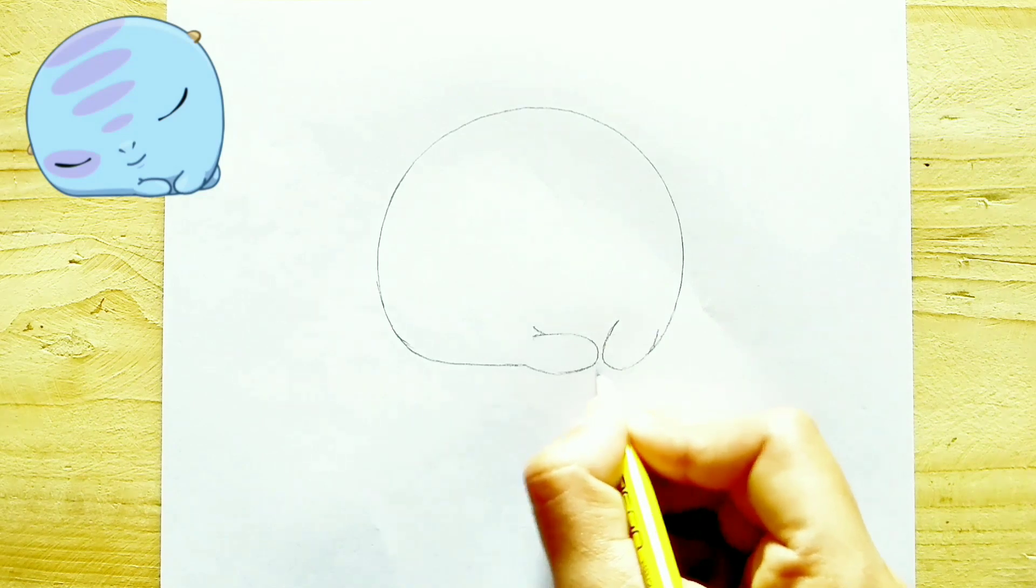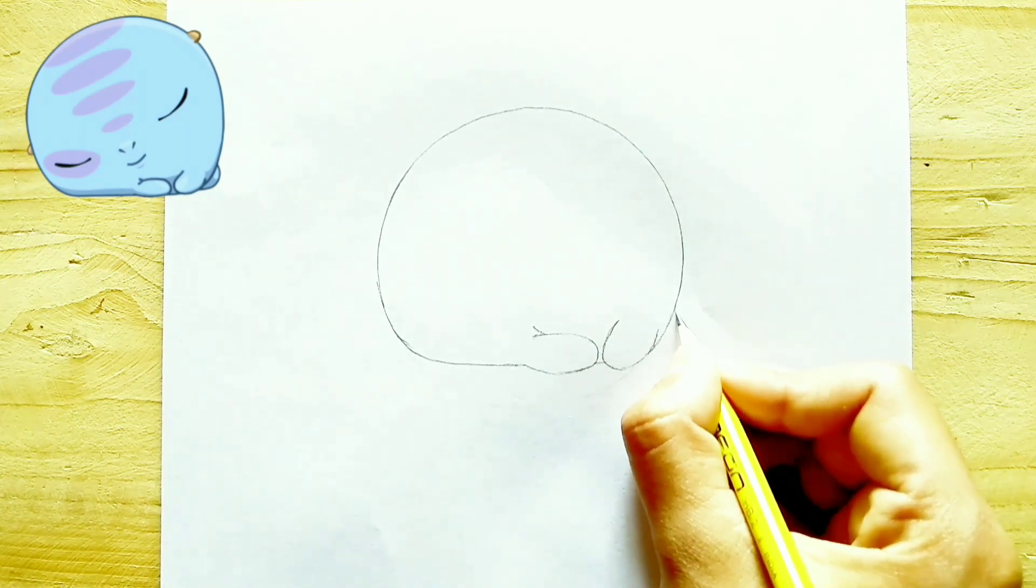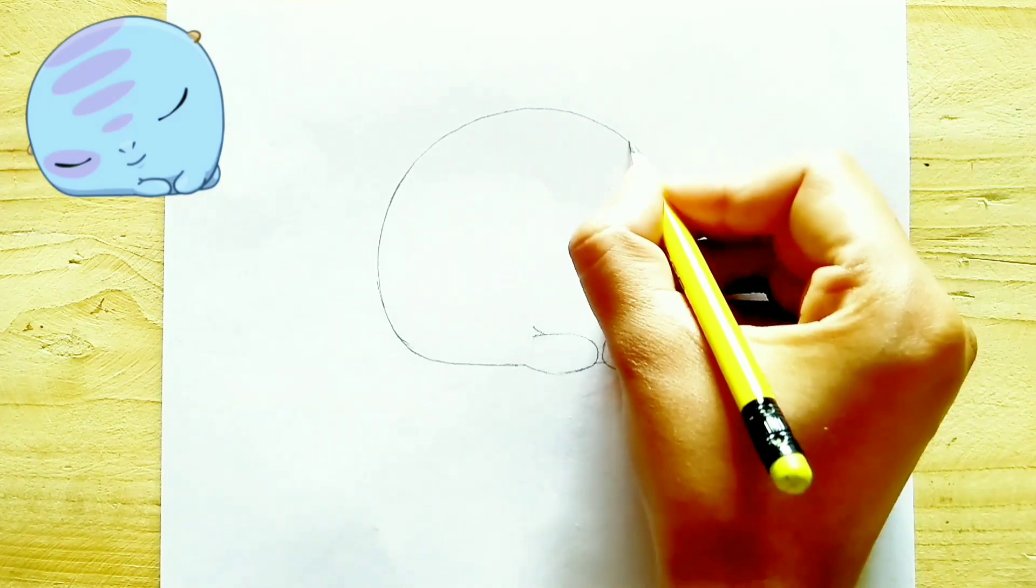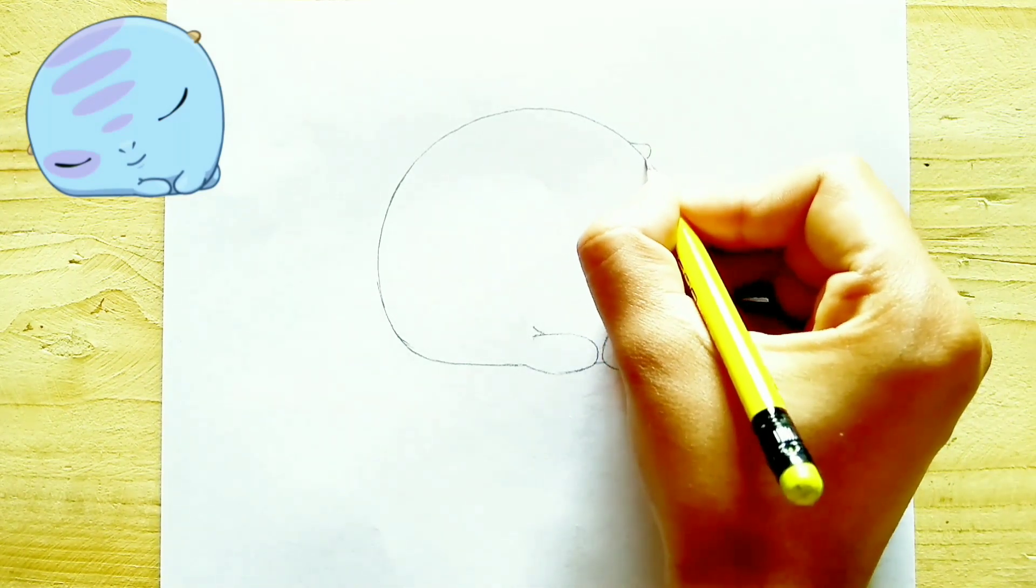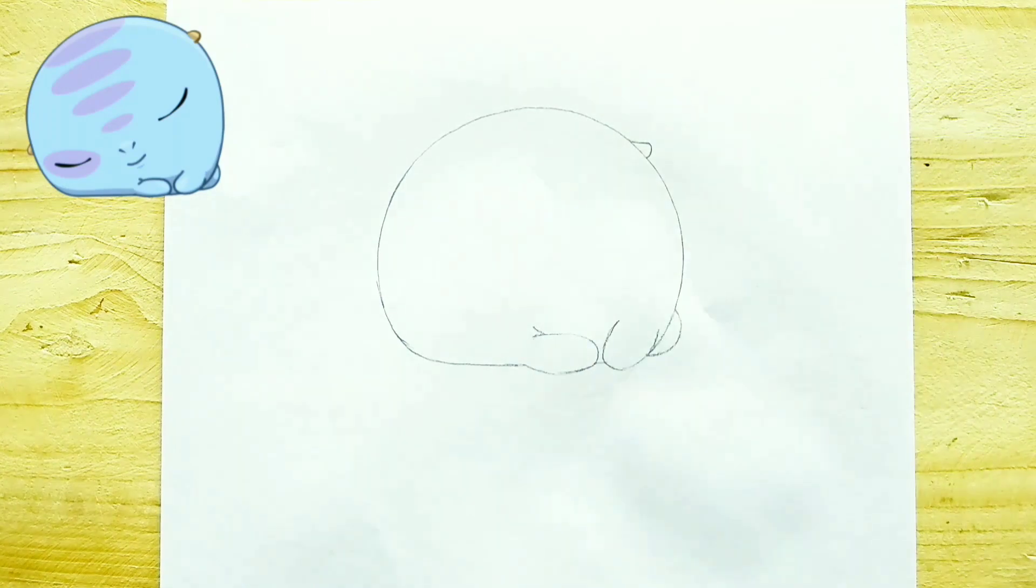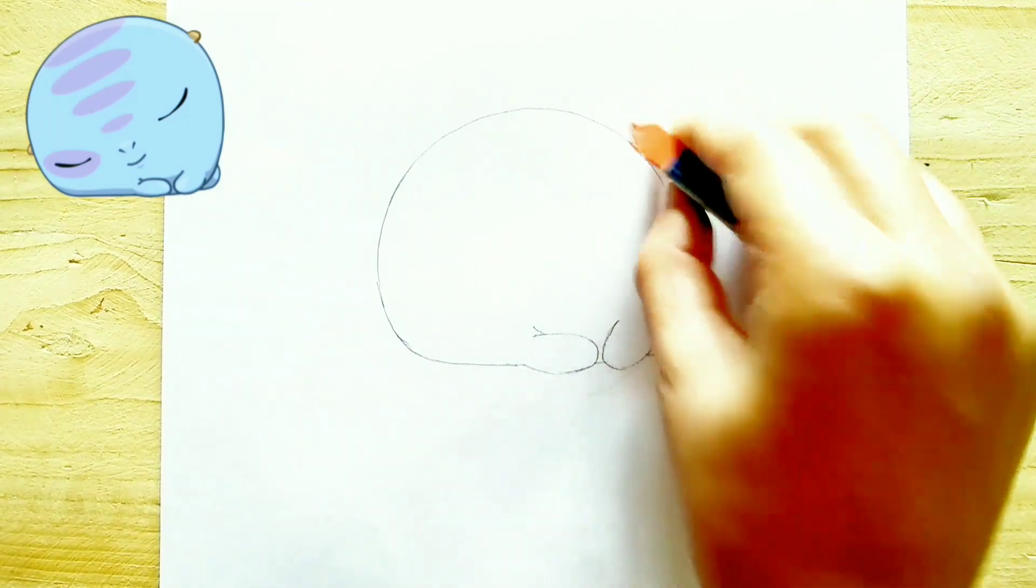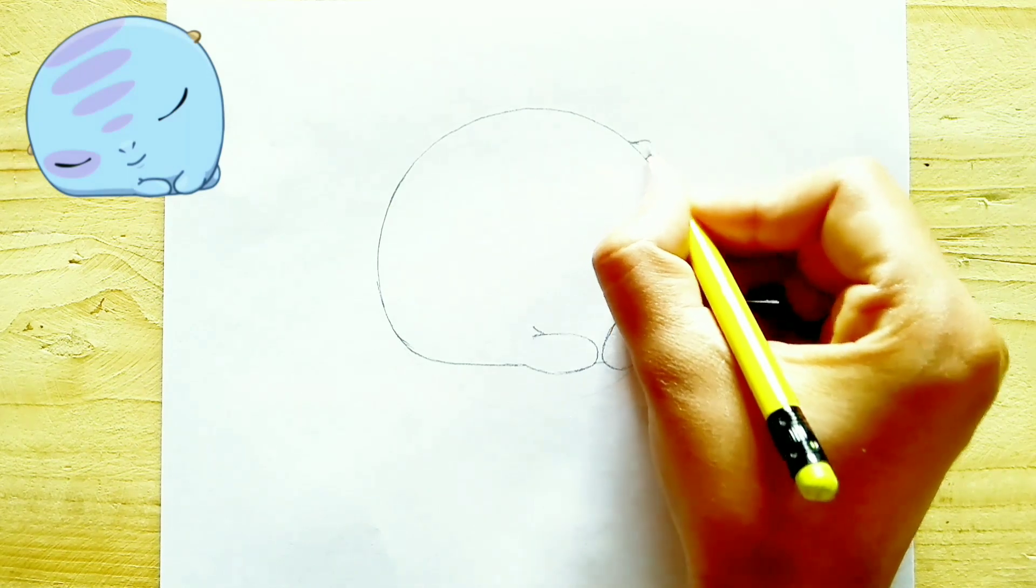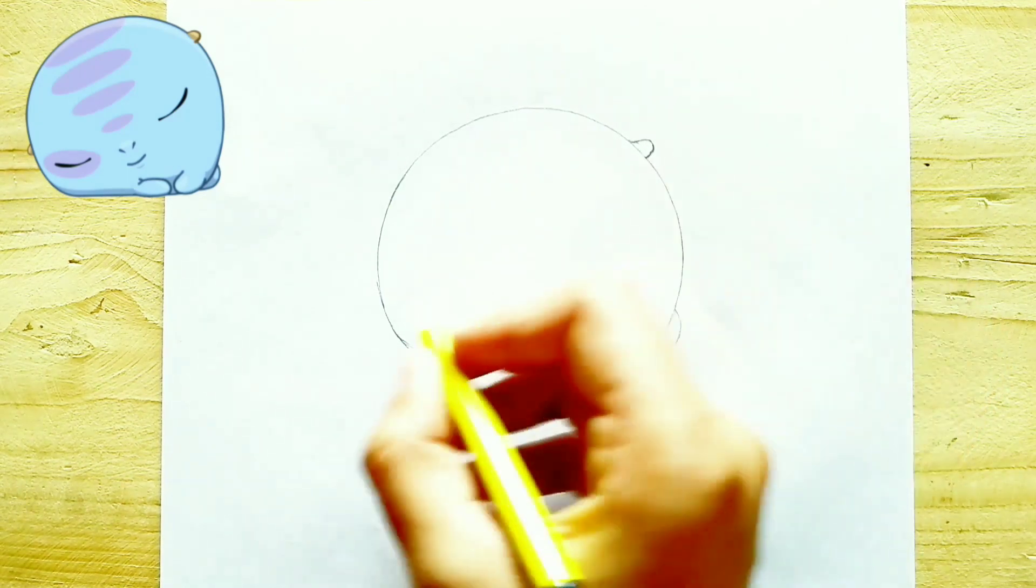After doing that, I will make ears. The right ear will be at the top and the left ear will be at the bottom side because the sticker or the creature is resting on the left side, so the left ear is a little lower and the right ear is upper side.